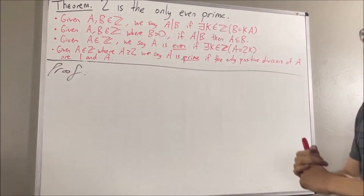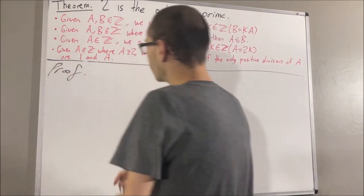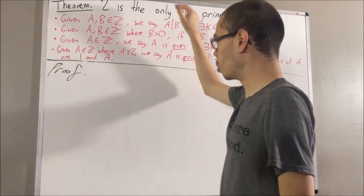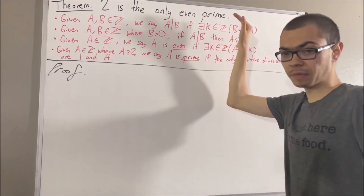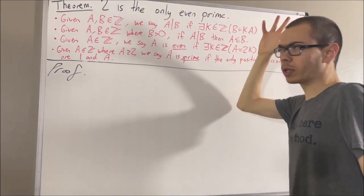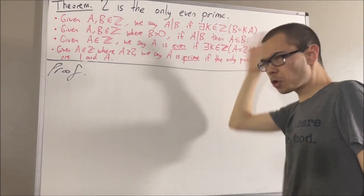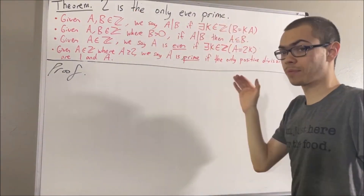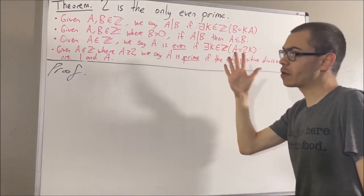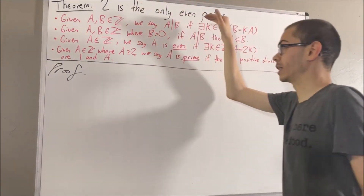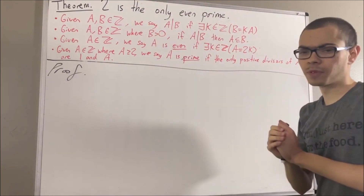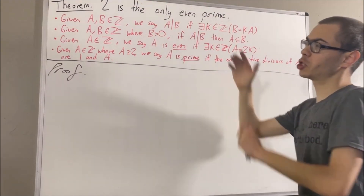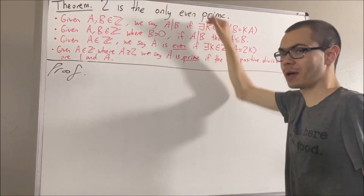Okay, now let's get into the proof. We want to show that 2 is the only even prime. So what we're going to do is first show that 2 is an even prime, and then show that 2 is the only even prime. So let's start out by showing that 2 is an even prime.